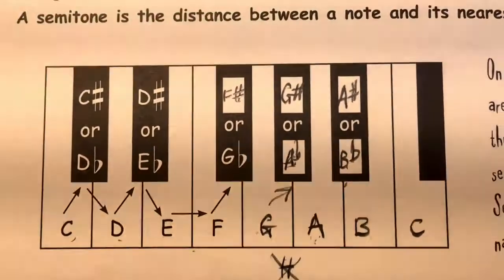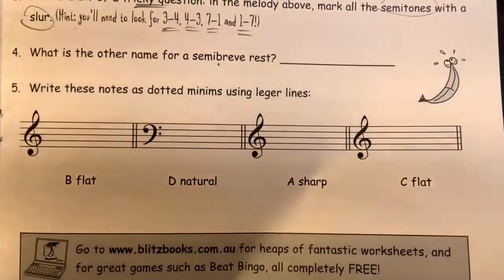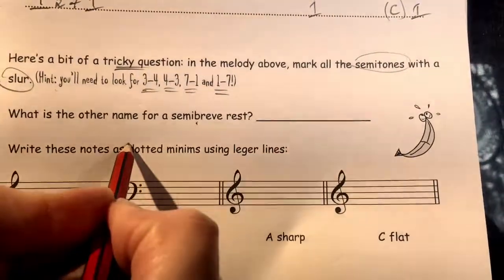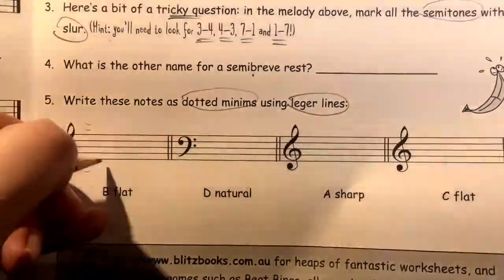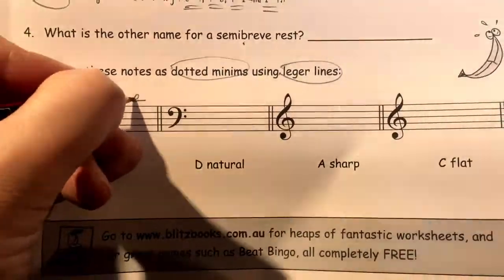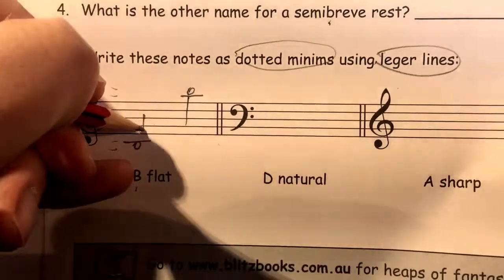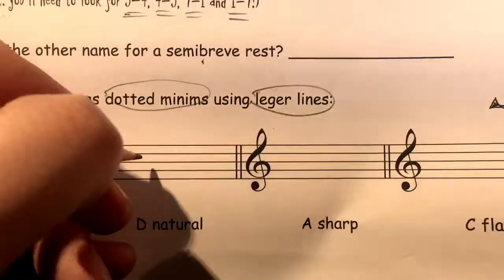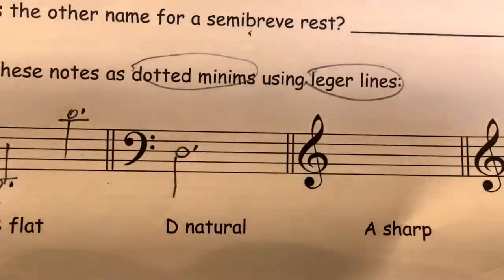Question four: what is the other name for a semibreve rest? Write these notes as dotted minims using ledger lines. For the first one in treble clef, we must find a B flat using ledger lines — we can either go below the stave or above the stave, and either is correct. To make a dotted minim, add a stem to create the note head, then add a dot to the right-hand side of the note. When drawing a dotted minim on a line, the dot must go above the line so it's clearly visible. Good luck!